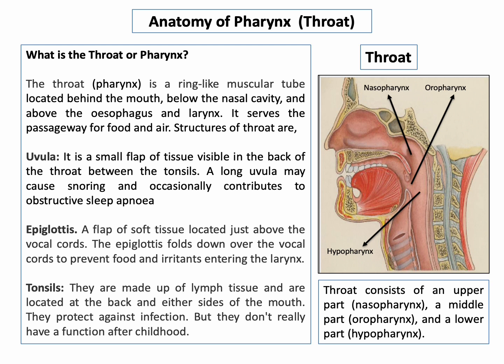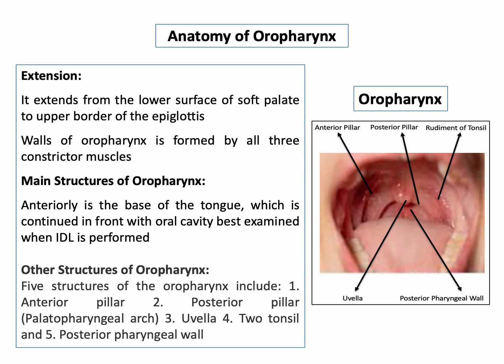The throat consists of three parts: an upper part called the nasopharynx, a middle part called the oropharynx — which is the focus of this micro-learning content — and a lower part called the hypopharynx.